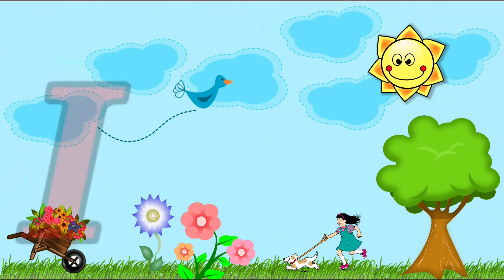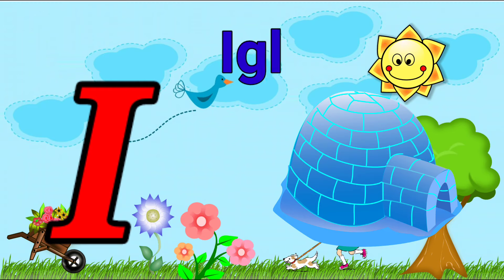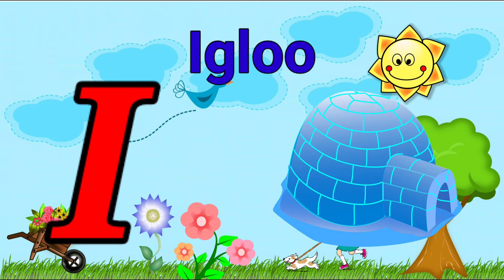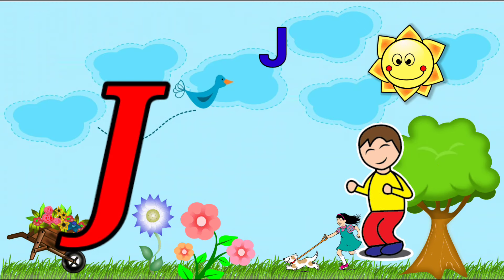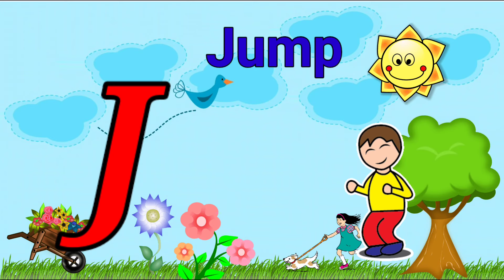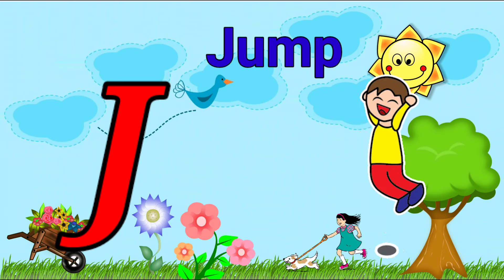I is for igloo, i-i-igloo. J is for jump, j-j-jump.